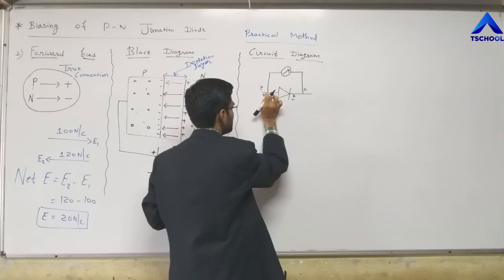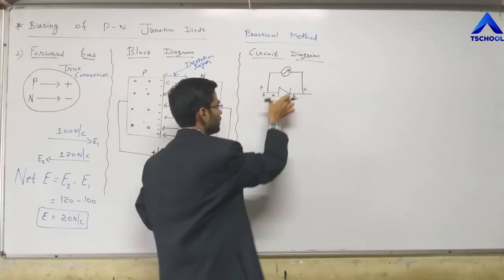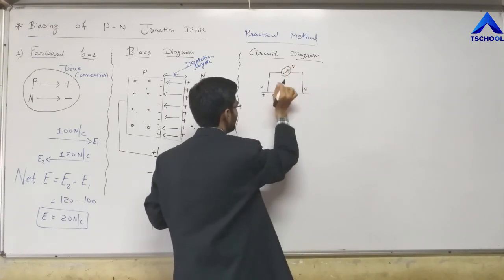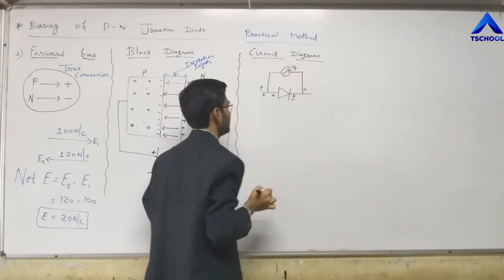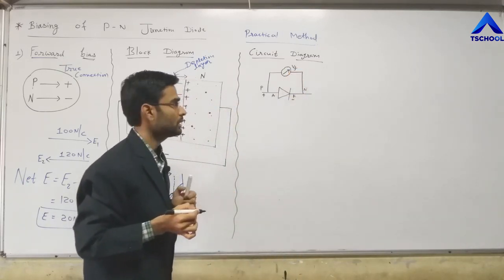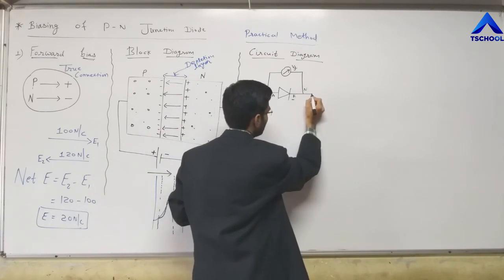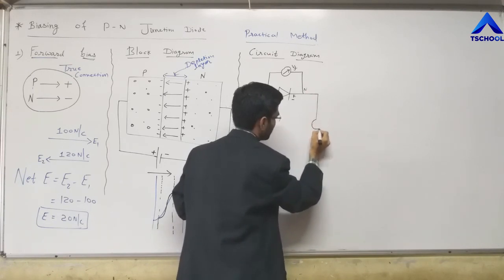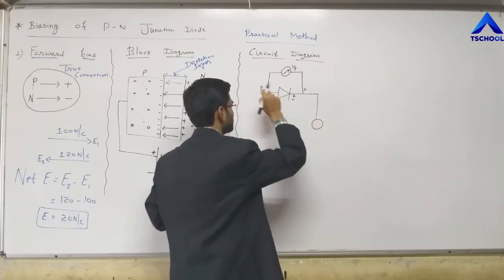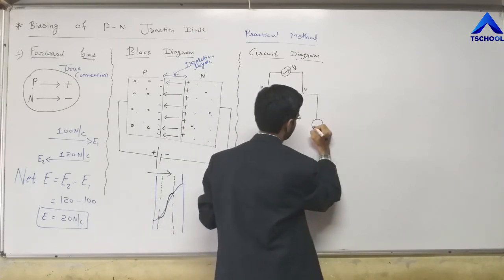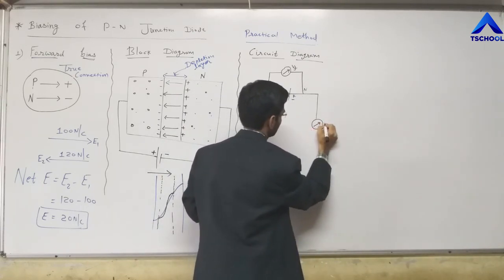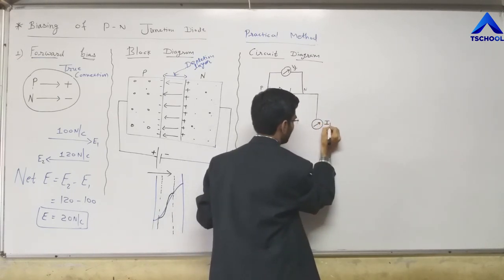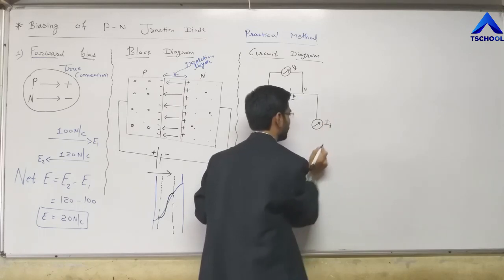The voltmeter measures the forward voltage VF. To measure the conventional electric current, we connect an ammeter in series with the PN Junction Diode, which measures forward current IF. In forward bias, the range of forward current is in milliamperes (mA). To control the voltage, we connect a variable resistance (rheostat) in the circuit, which allows us to control the voltage.